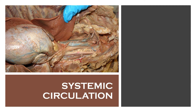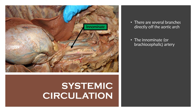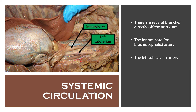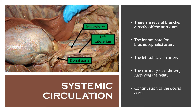There are several branches off the systemic arch. The first is the innominate or brachiocephalic artery. The second is the left subclavian. There's also the coronary — not shown here, but we all know the coronary supplies the heart. The systemic arch then continues to become the dorsal aorta.